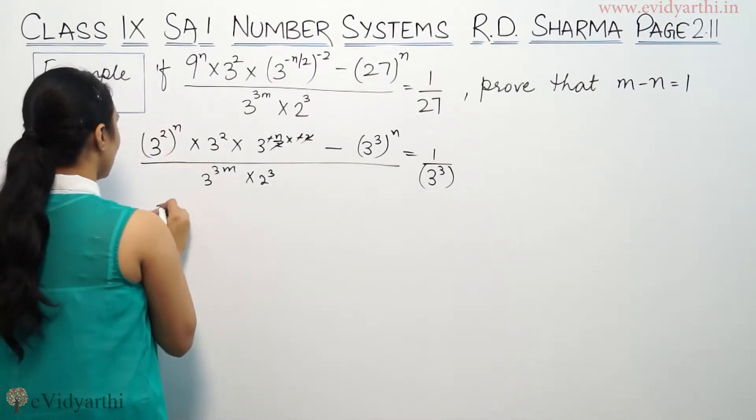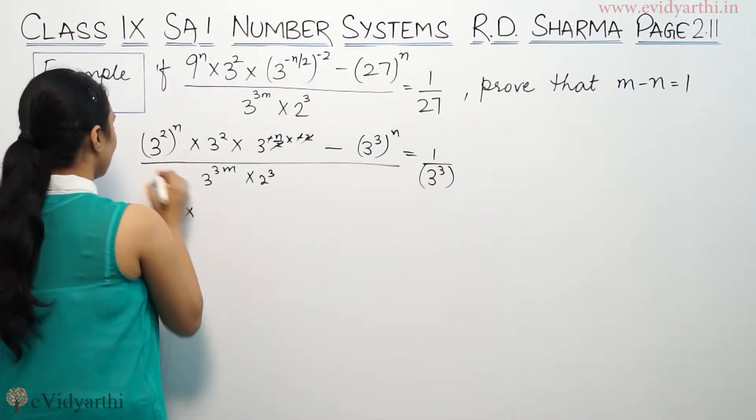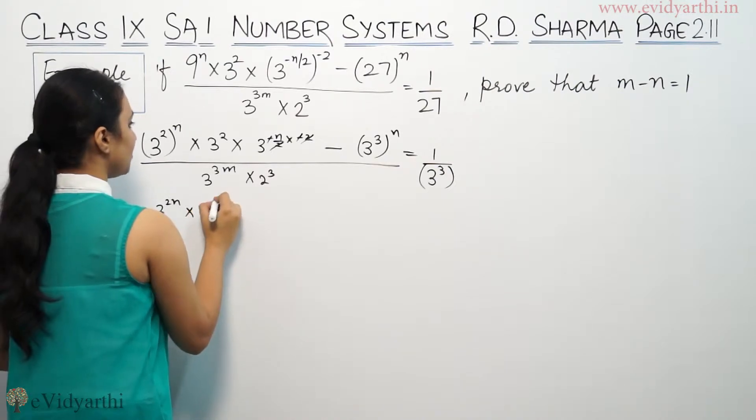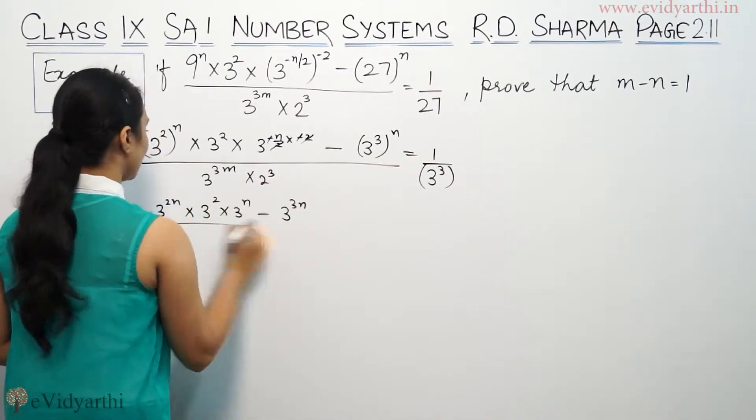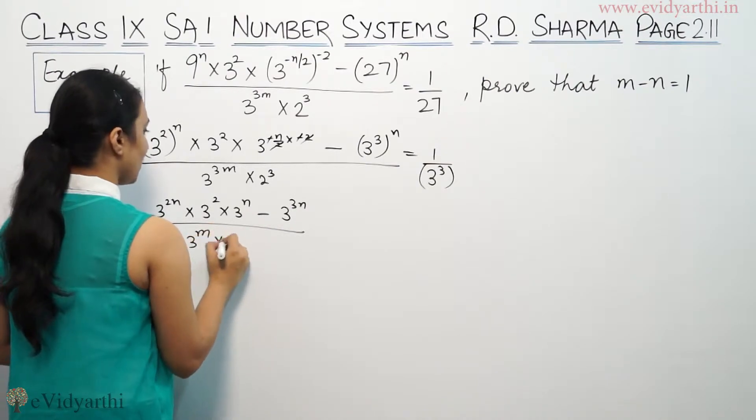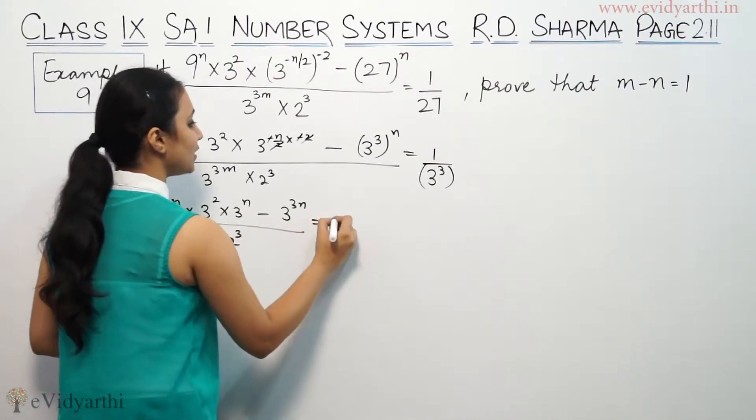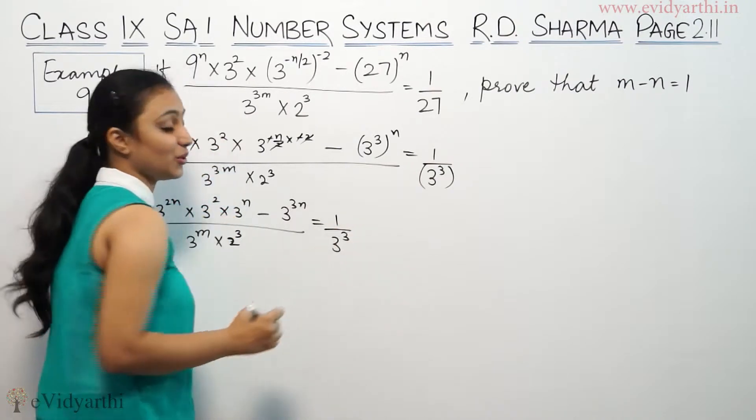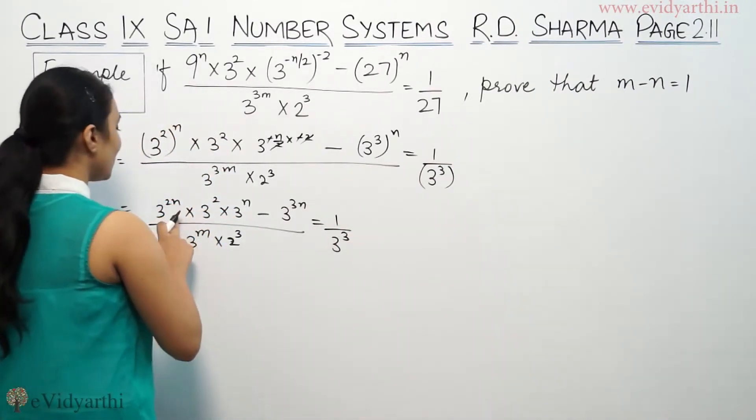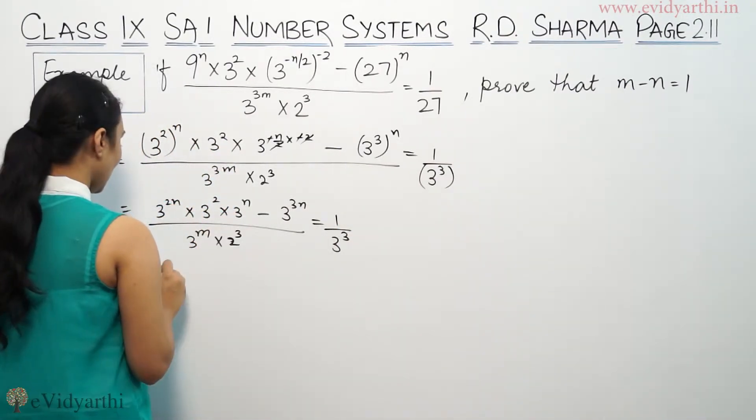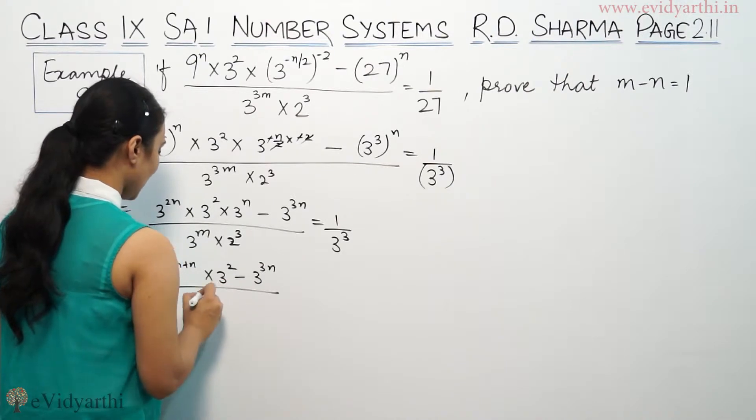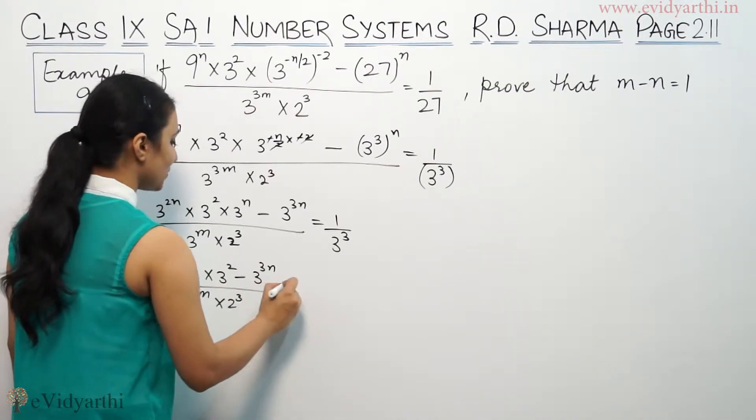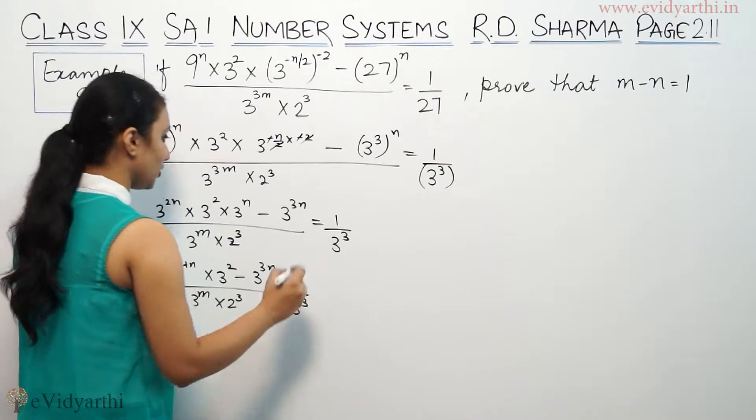So we have 3^(2n) × 3² × 3^(-n/2) minus 3^(3m) by 3^m × 2³ equals 1/3³. Combining the powers, 3^(2n) × 3^n gives us 3^(3n).